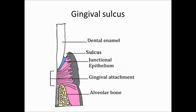This diagram shows the gingival sulcus. You can see the dental enamel, the sulcus itself, the base of which is the junctional epithelium — that's the blue area. The gray area is the gingiva, which forms the outer wall of the sulcus. It is a V-shaped shallow space. You also have the gingival attachment, which consists of the gingival fibers and gingival bundle, and below it the alveolar bone.